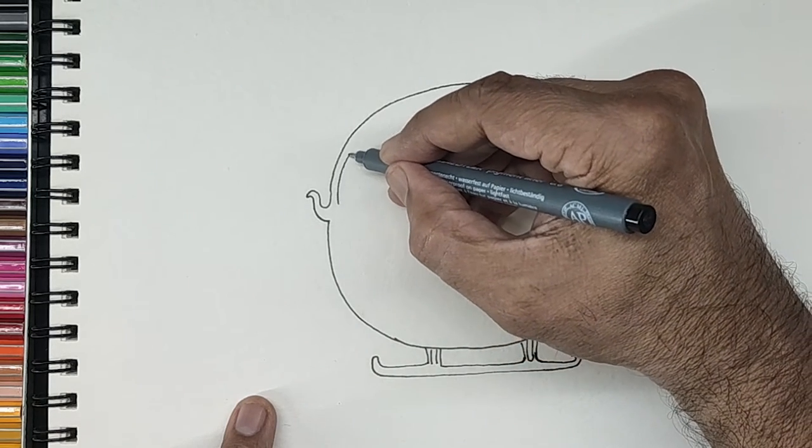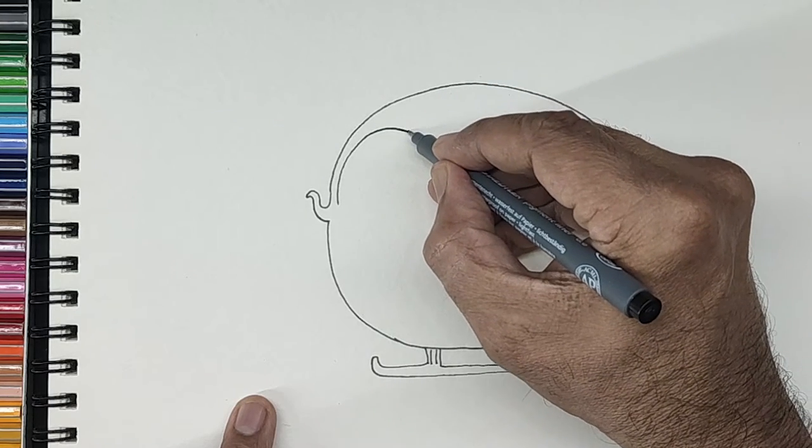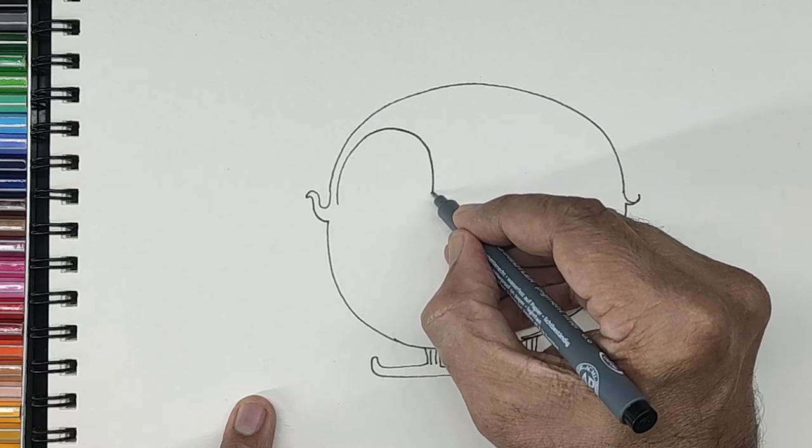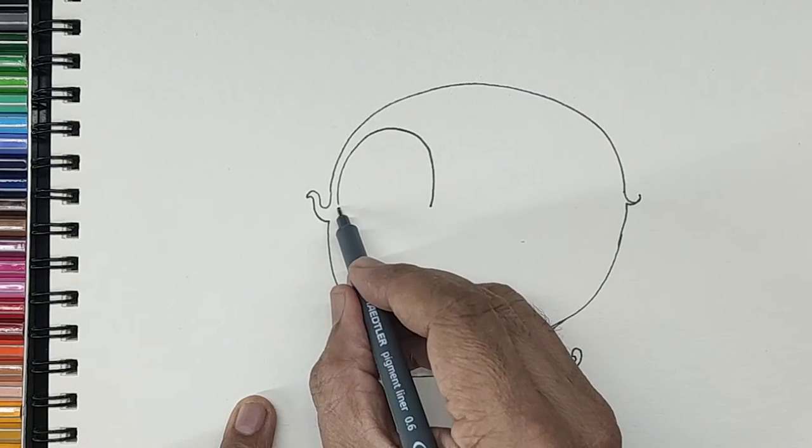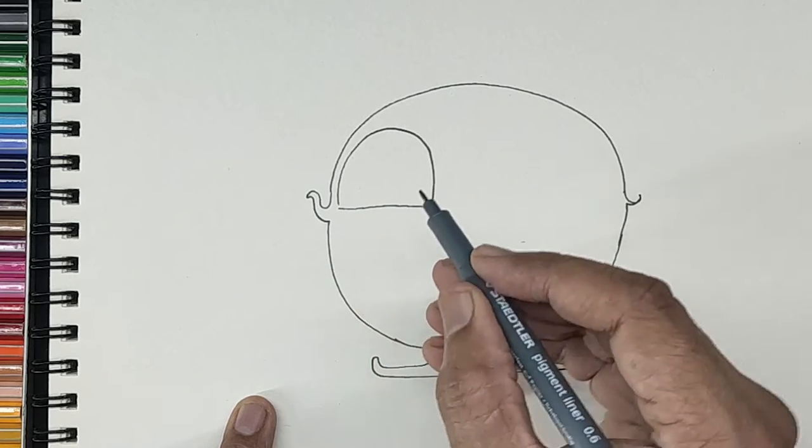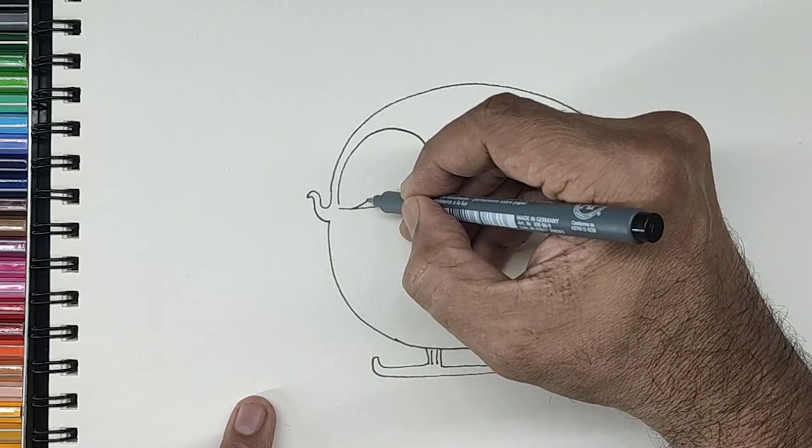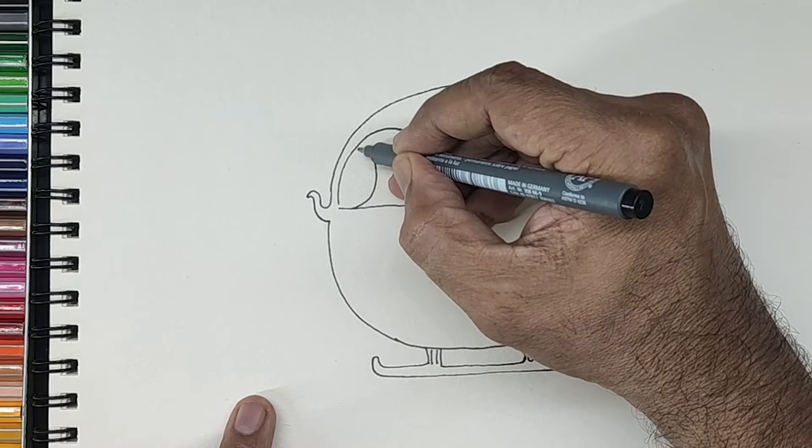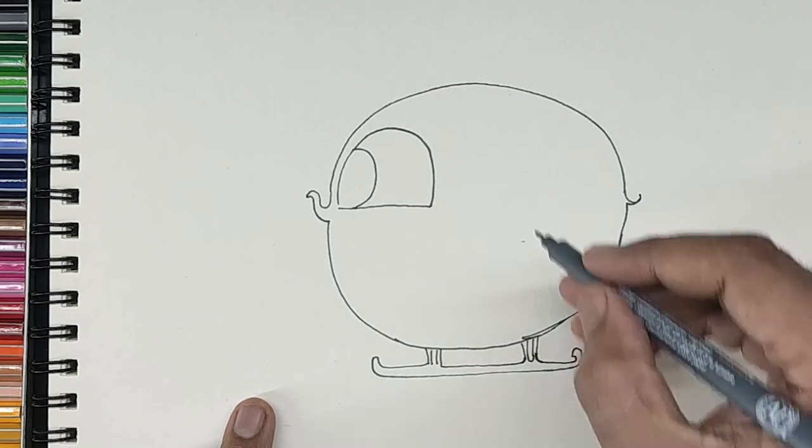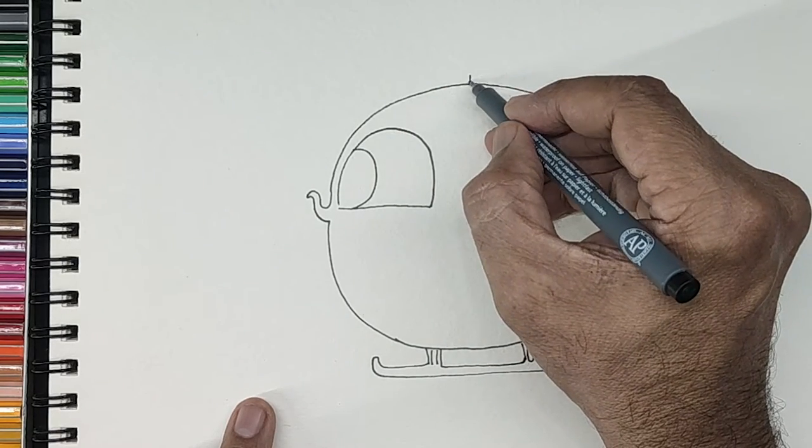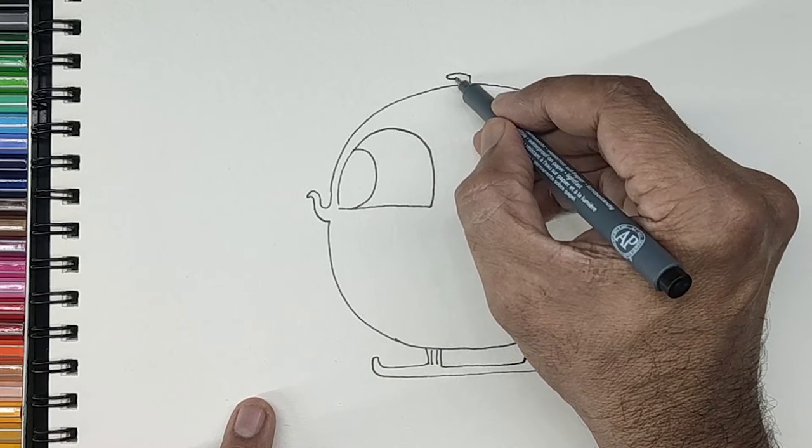We will draw a large eye which will become the cockpit. Let us now draw the overhead rotors.